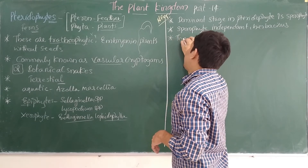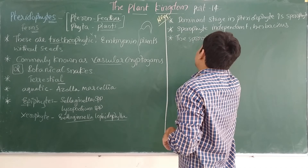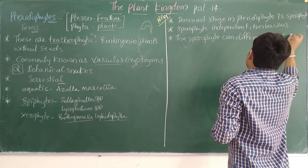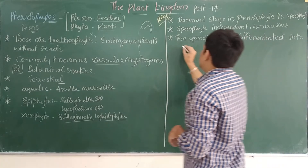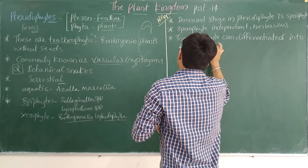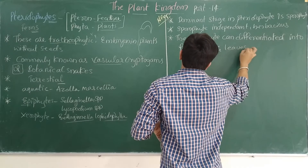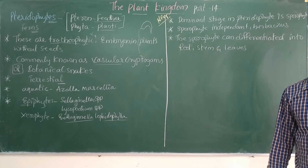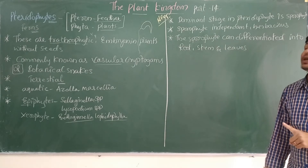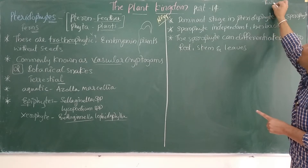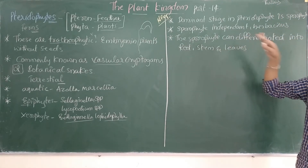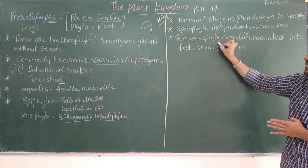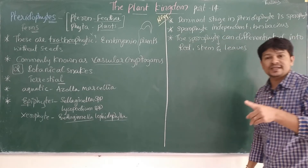The sporophyte can be differentiated into root, stem, and leaves. This is a very unique character. In bryophytes like Funaria, the plant body shows root-like, stem-like, and leaf-like structures. But in pteridophytes, we directly differentiate the sporophyte into a proper root system and shoot system — root, stem, and leaves.